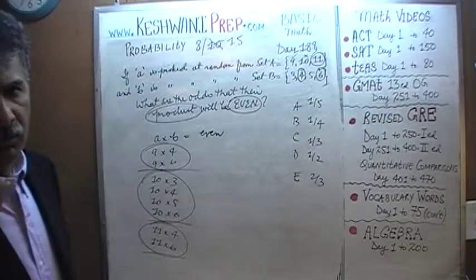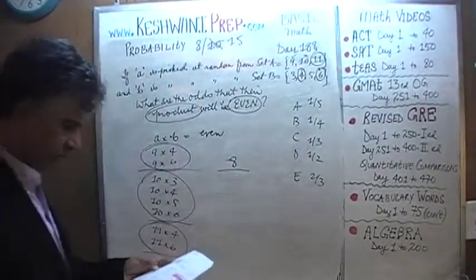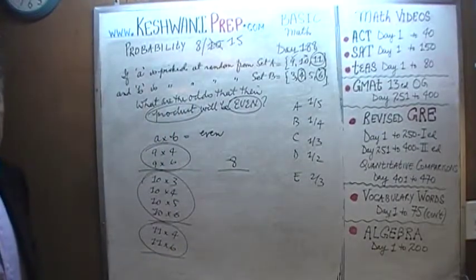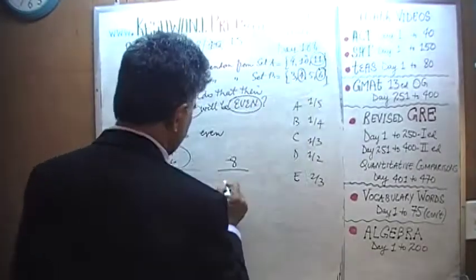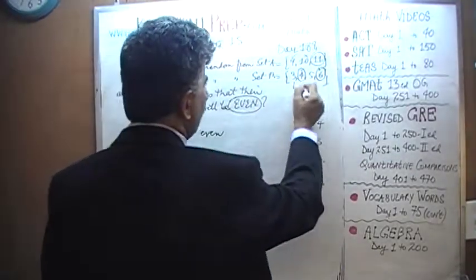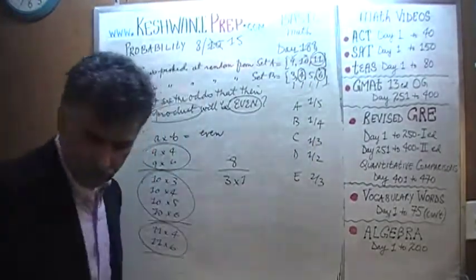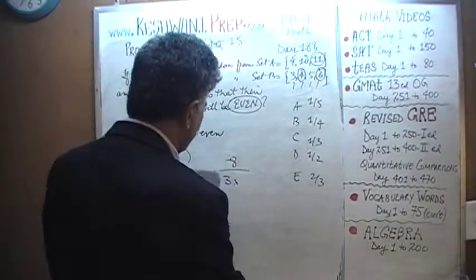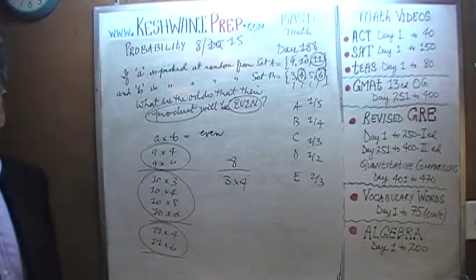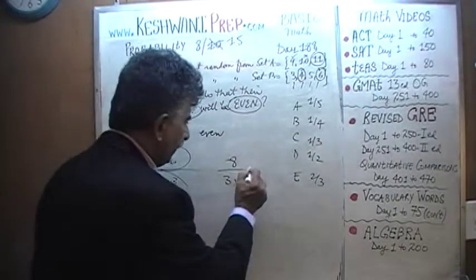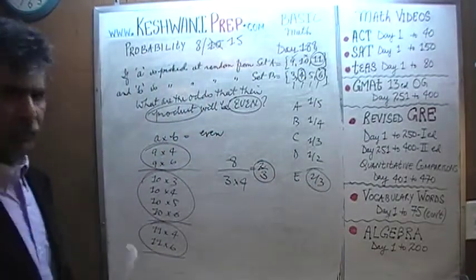With 9 there are two possibilities, with 10 there are four possibilities, and with 11 there are two more possibilities — eight possibilities altogether. Out of how many total possibilities? Set A contains three members and set B has four members, so there are 12 different possibilities total. Eight out of 12 gives us two thirds. The answer is two thirds.